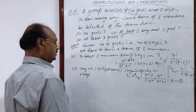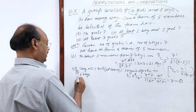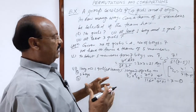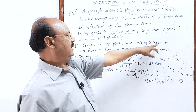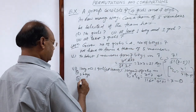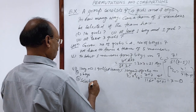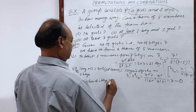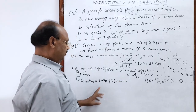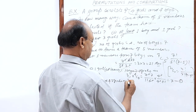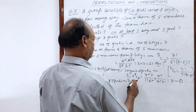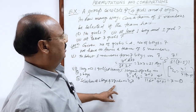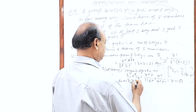Now case B: we can select two boys and three girls — total five members. So you can select two boys from seven and three girls from four. In how many ways? Two boys from seven: seven C two. And three girls out of four: four C three.